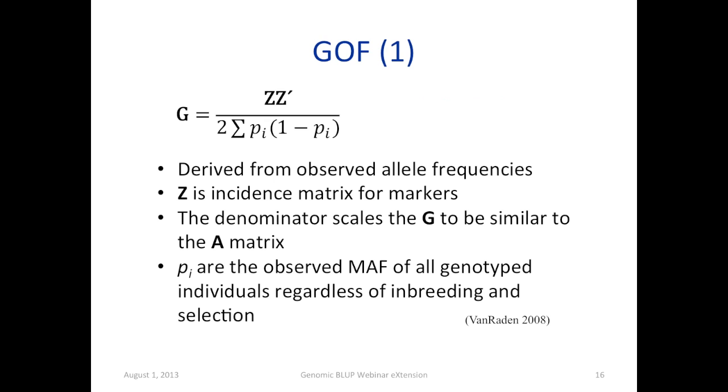The first method, I numbered them from 1 to 5. There are more than 5 actually, but I am only covering 5 or 6 of them. This is called GOF matrix. It's derived from the observed allele frequencies. So we know what Z is. It's the incidence matrix for the markers we just talked about.